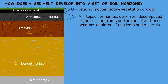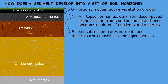Through time, the A horizon will become depleted of its nutrients and minerals that end up concentrated in the next lower unit of the B horizon. The B horizon sometimes is called a subsoil. The mineral composition has been transformed due to the interaction with the overlying A horizon. Usually, plant roots and animal disturbances are less extensive at this depth.